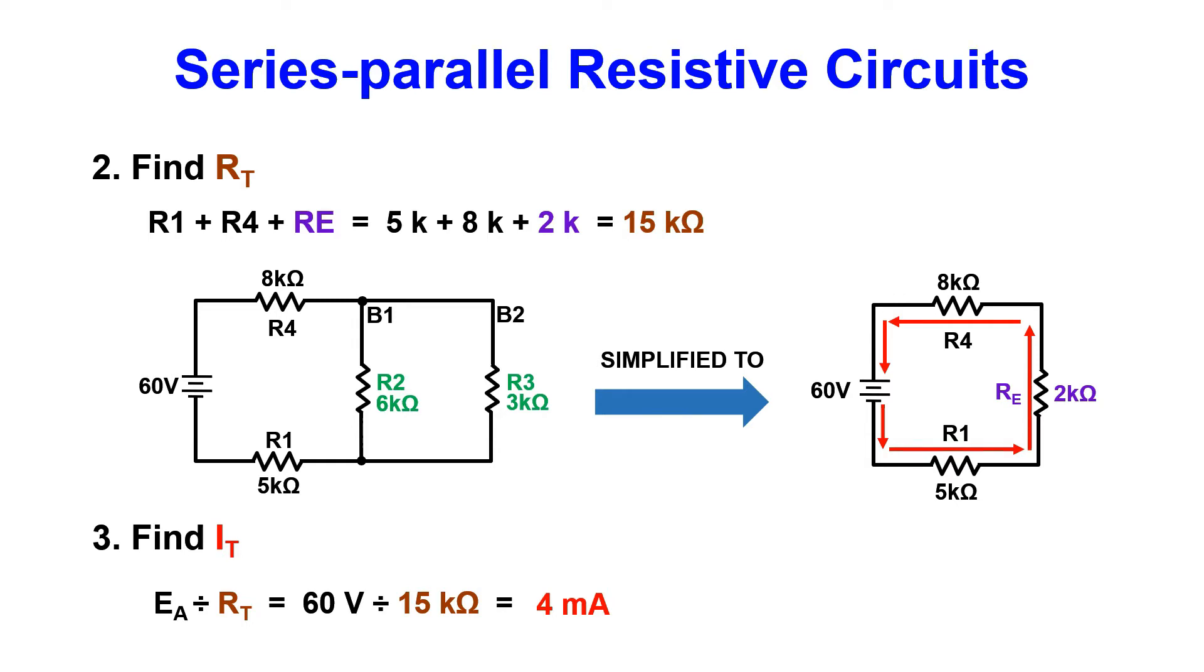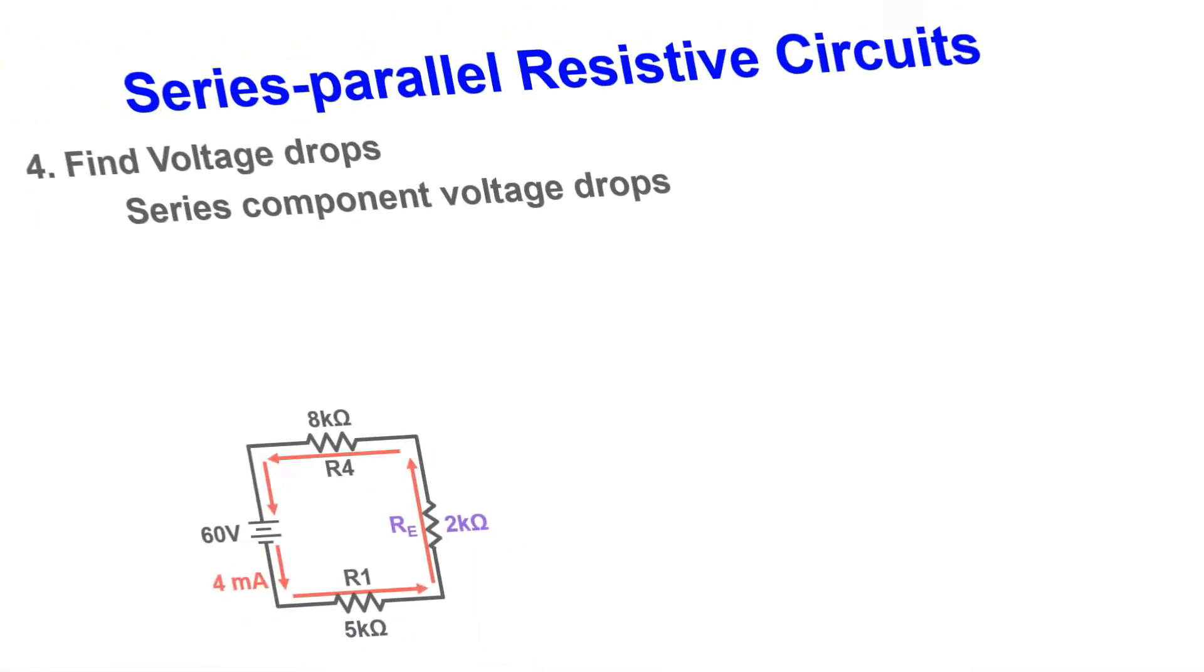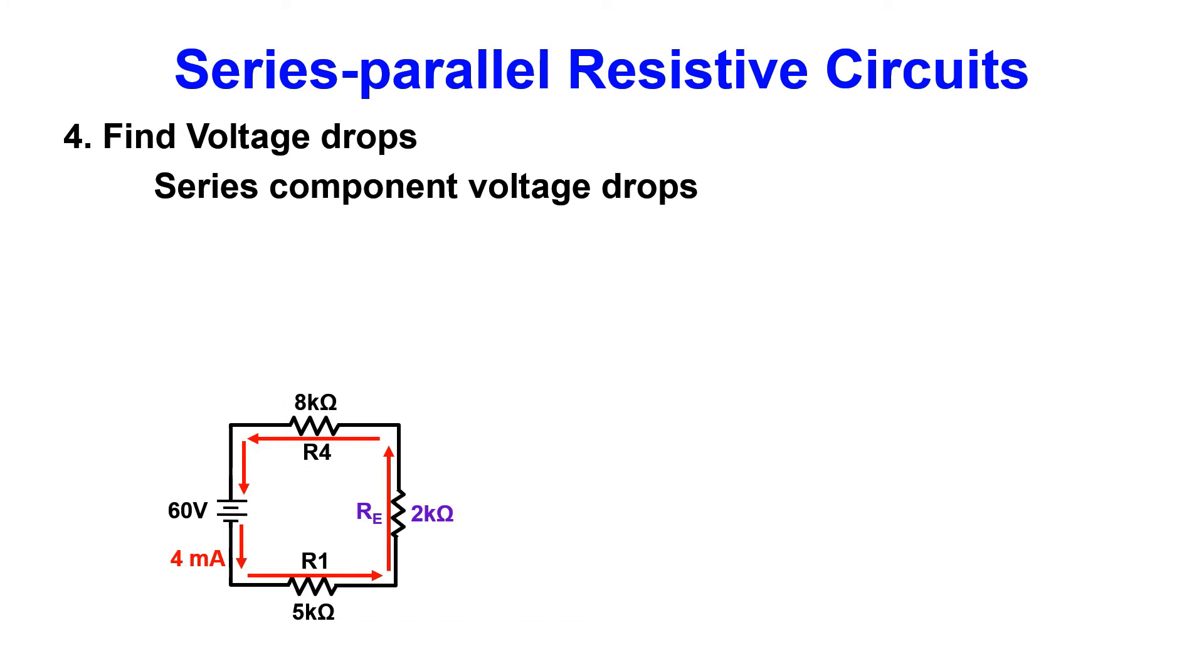Now, to find the voltage drops of the resistors. Since all the current flows through the series portion of the circuit, we can solve R1 and R4 like a normal series circuit. For R1, take the resistor value of 5k times 4 milliamps and that gives you 20 volts. The same goes for R4. 8k times 4ma gives you 32 volts.